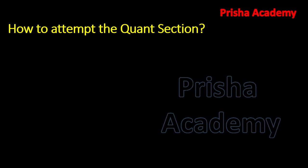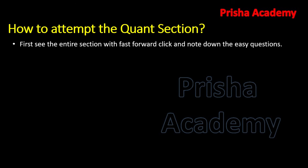In the online papers, you have different sections to attempt. Once you reach the quantitative section, please keep this point in mind: first, see the entire quantitative section with a fast-forward click and note down the easy questions. In 30 questions, generally they give around 10 to 12 questions which are very easy.